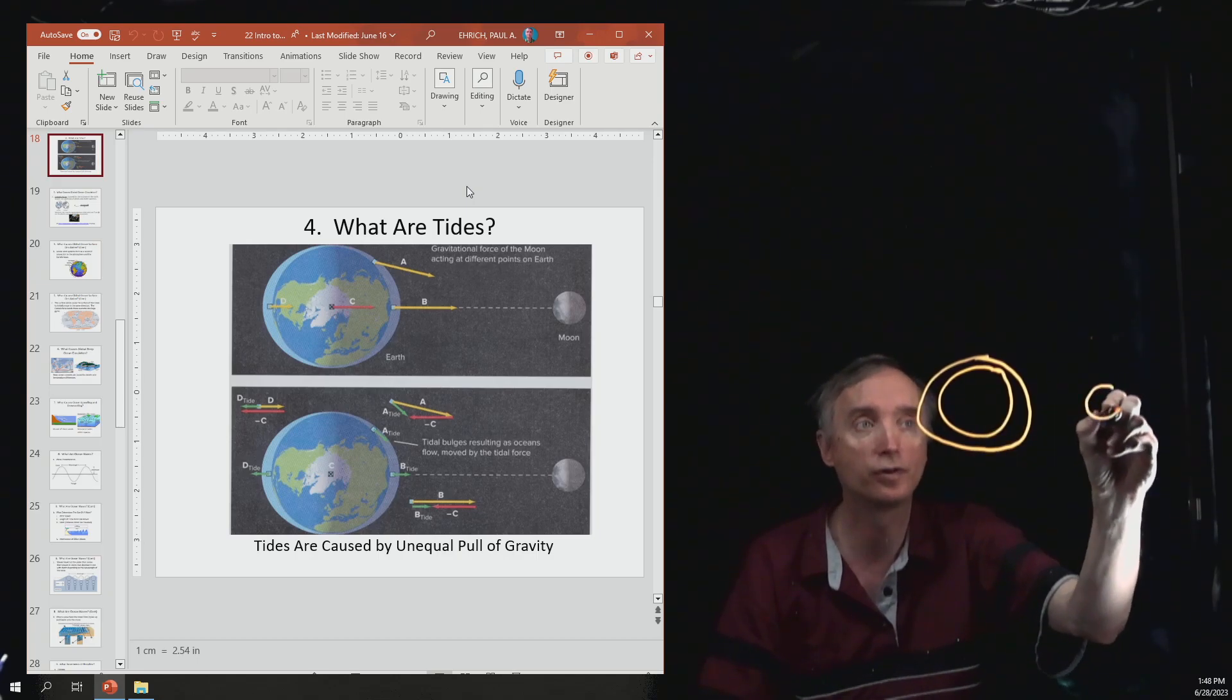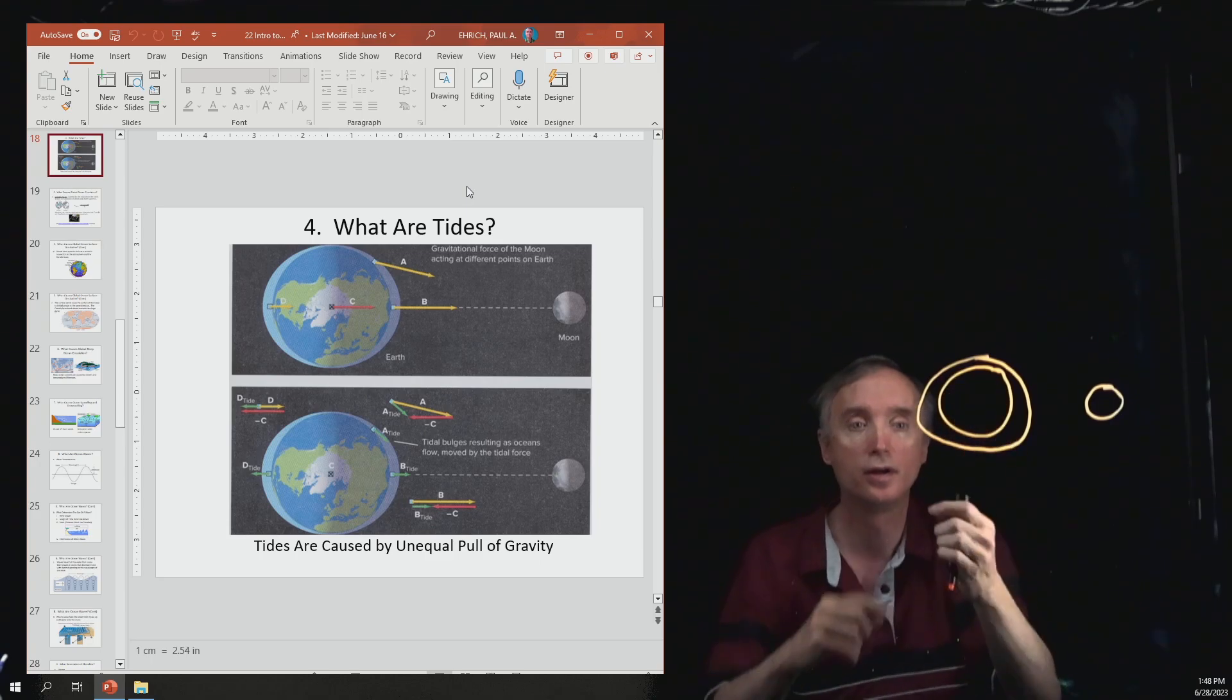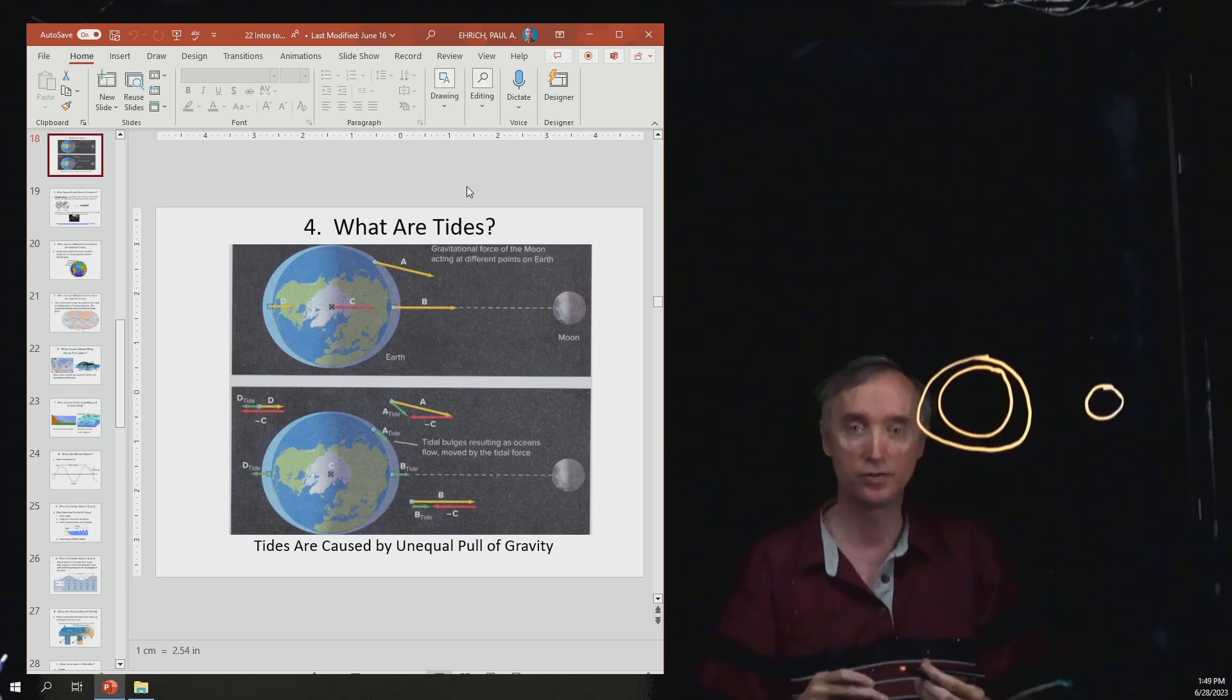And then put the moon over here. So the gravity of the moon pulling on the water, pulling on the earth, pulling on the water, causes these bulges to occur.